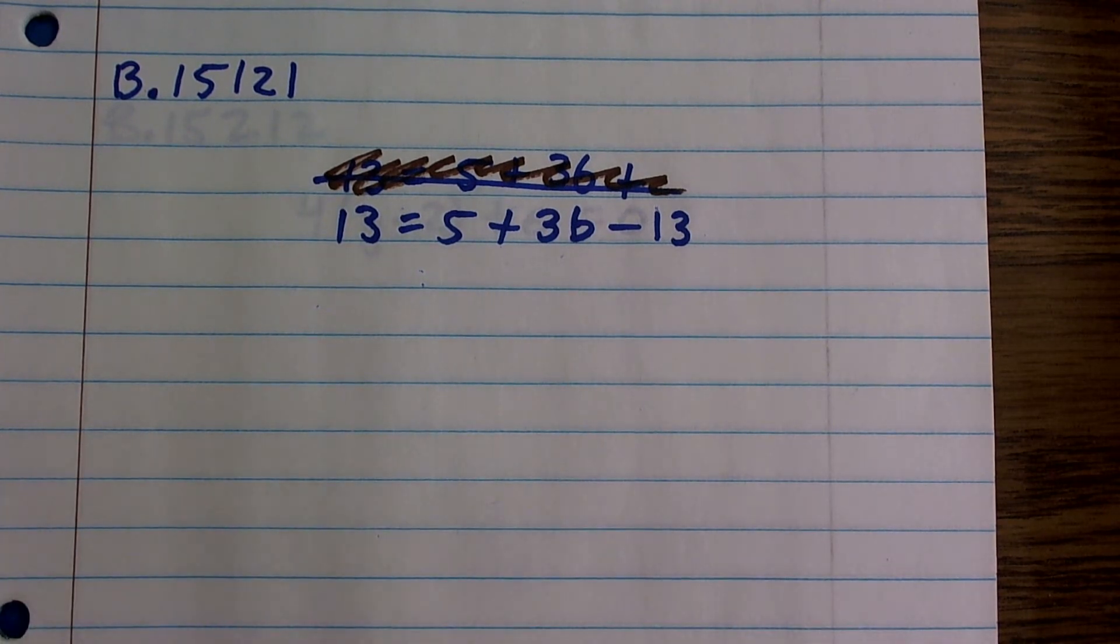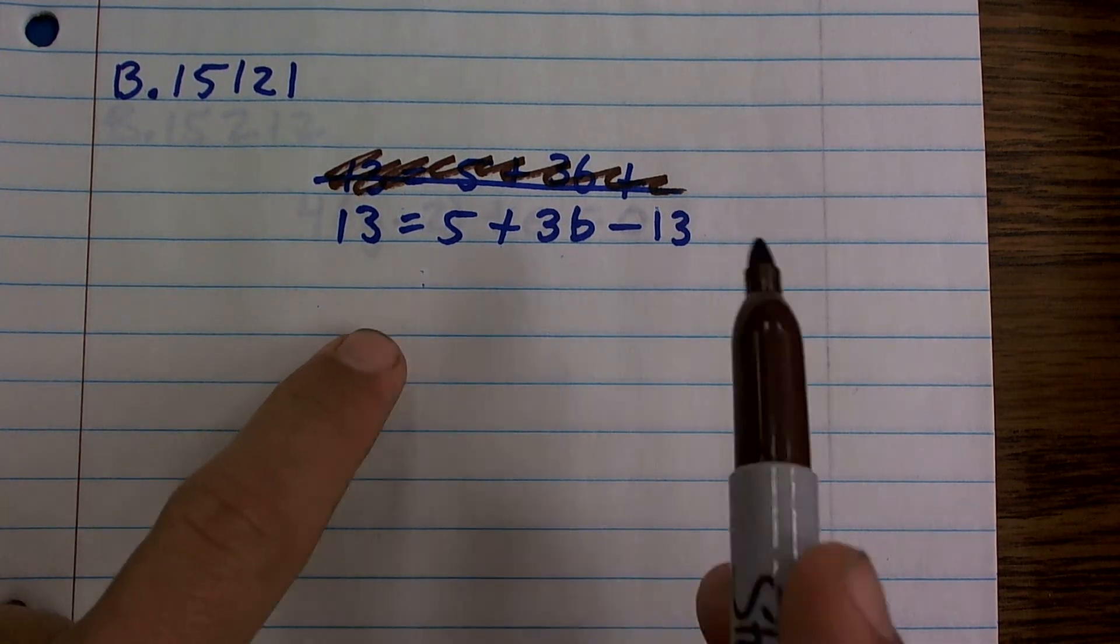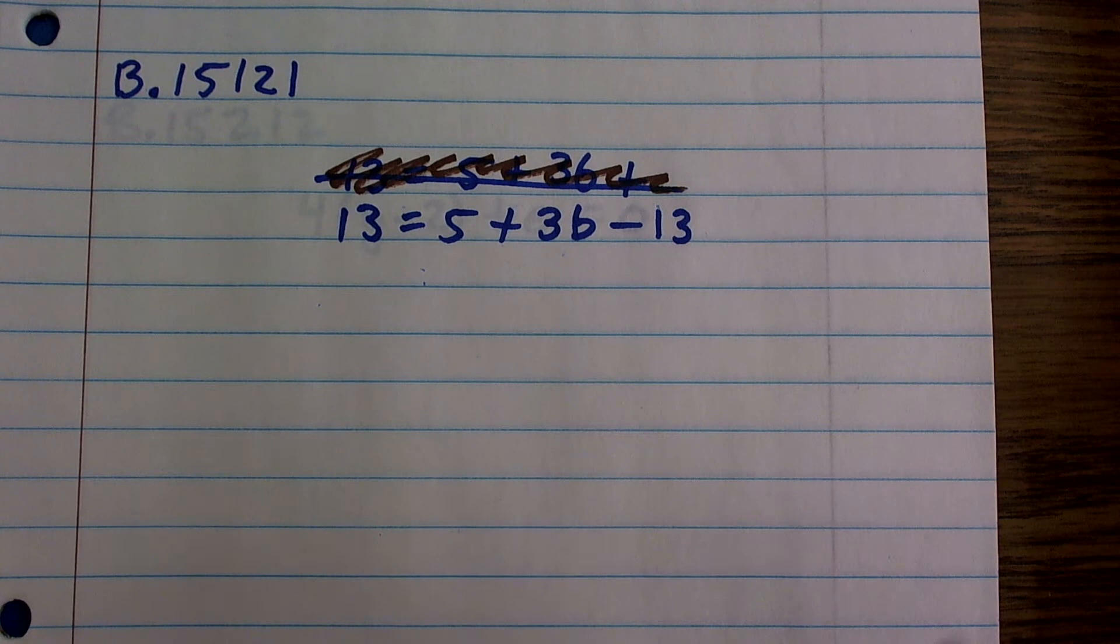But remember, when we're solving equations, we always got to undo addition and subtraction. So you notice since I have a positive 5 and I have a negative 13, so which one do I do first?